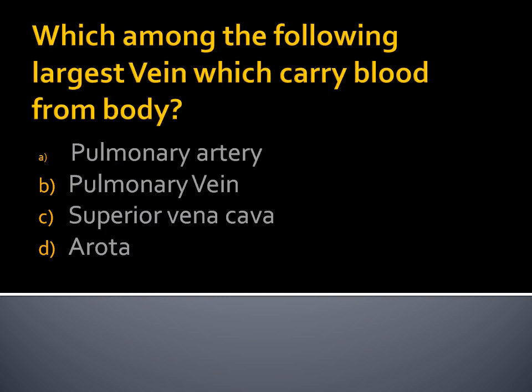Third question: Which among the following is the largest vein which carries blood from the body? That is, which is the largest vein in our body that carries deoxygenated blood from the body to the heart? Option A, Pulmonary artery. Option B, Pulmonary vein. Option C, Superior Vena Cava. Option D, Aorta. Our answer is Superior Vena Cava. Before solving these questions, you should watch the previous videos on blood and GST so that you can solve these questions easily.